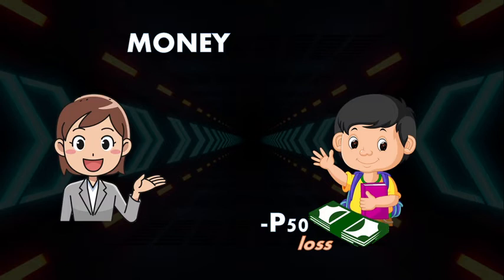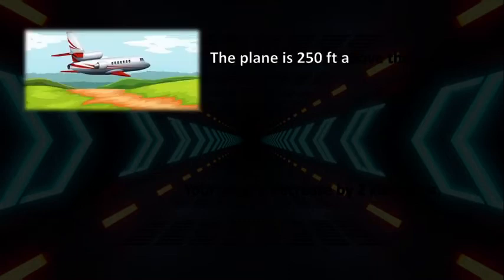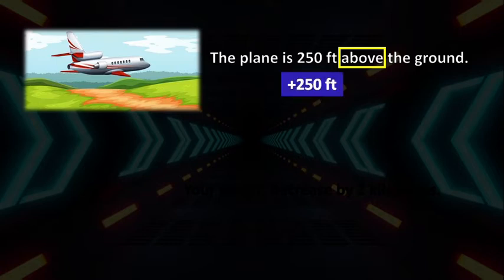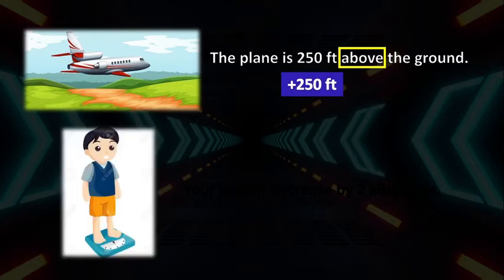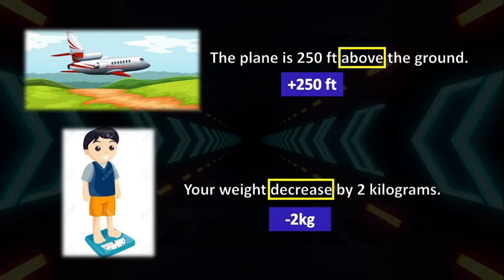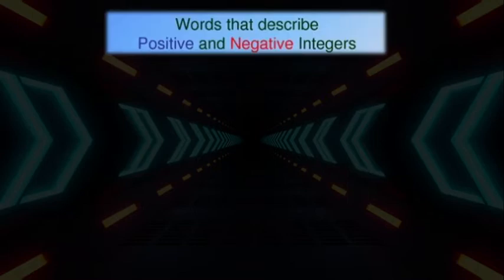Let's have some situational phrases which can also represent integers. The plane is 250 feet above the ground. Our word clue here is the word 'above,' which represents positive numbers — so it can be represented by positive 250 feet. Another example: your weight decreased by 2 kilograms. The keyword here is 'decrease,' which means it is negative 2 kilograms. Here are some word clues that describe positive and negative integers.